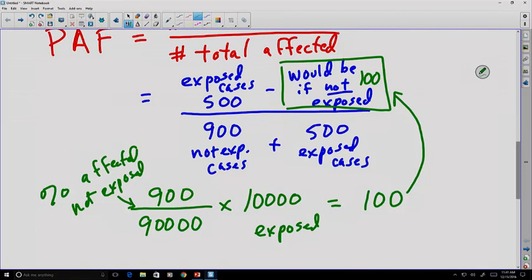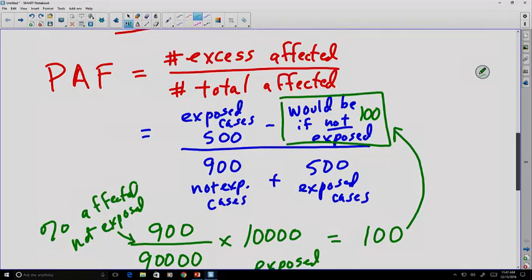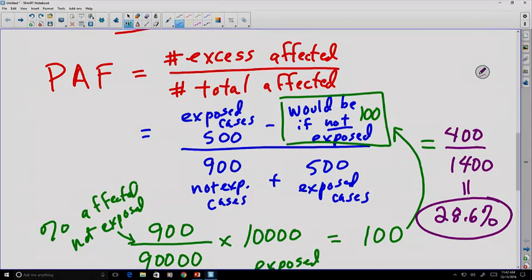So there's the relationship we're looking for: we take the excess affected — the people affected beyond what would normally be expected — divided by the total. That's our population attributable fraction. Doing that calculation, we get 400 on top divided by 1,400. In other words, out of the 500 exposed cases, 400 were above and beyond the percentages expected in the population. Comparing that to the 1,400 total cases gives us a PAF value of 28.6%.